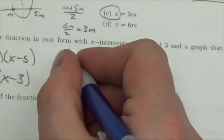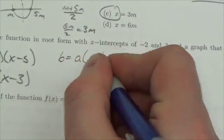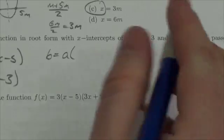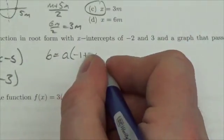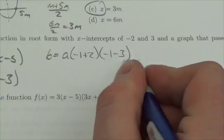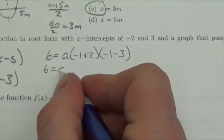So then this will become 6 equals a, don't know what that is yet, times negative 1 plus 2 times negative 1 minus 3. Now we just evaluate the binomials.